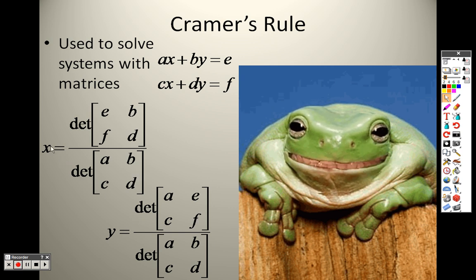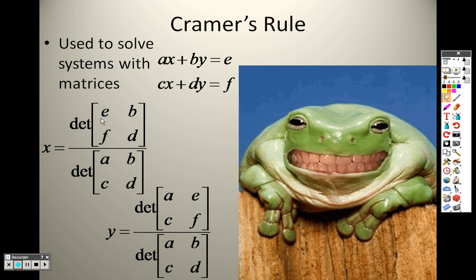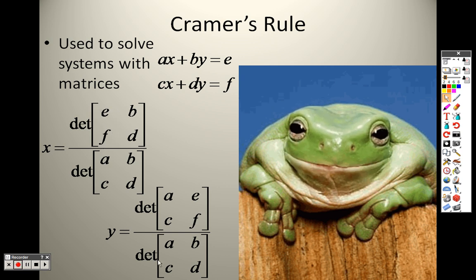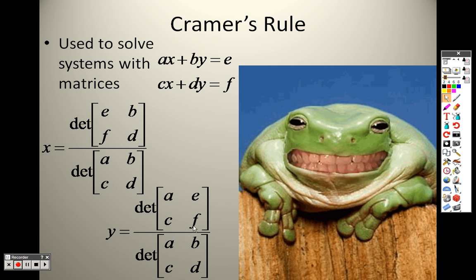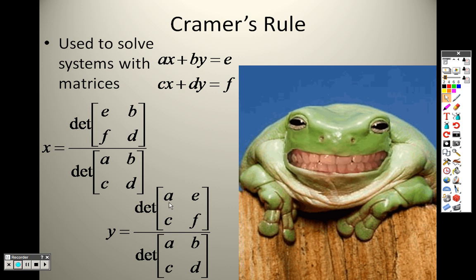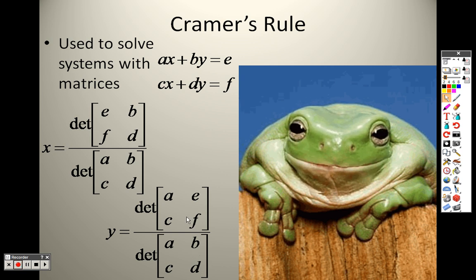Notice how when I'm solving for X, X has the answer in that column. This is the X column down here, and up top the answer is in the X column. When I'm solving for Y, Y has the answer in that column. So here's the X column and down here it's the Y column, and then the answer on the top is in for Y.